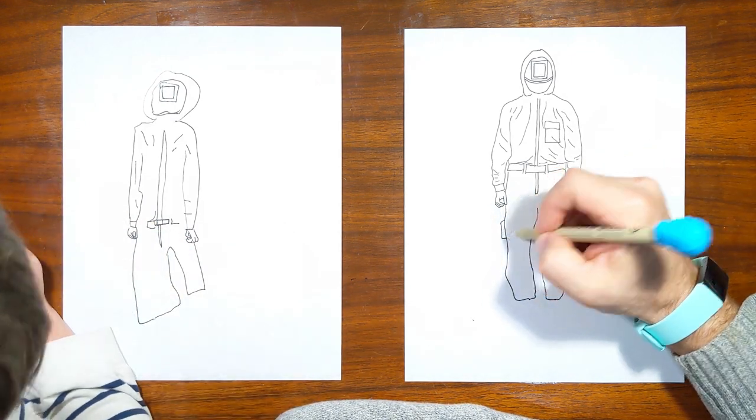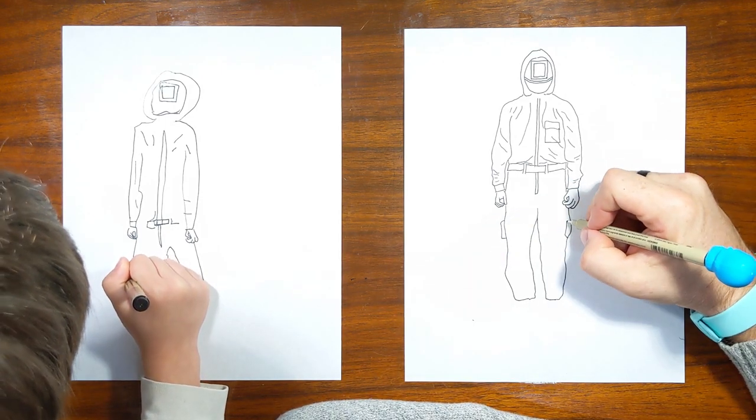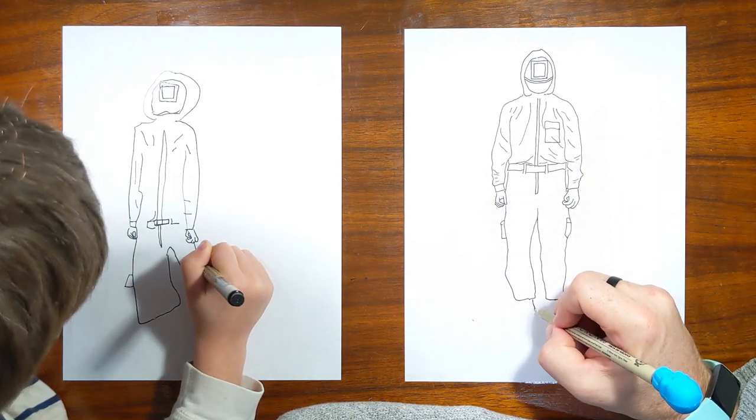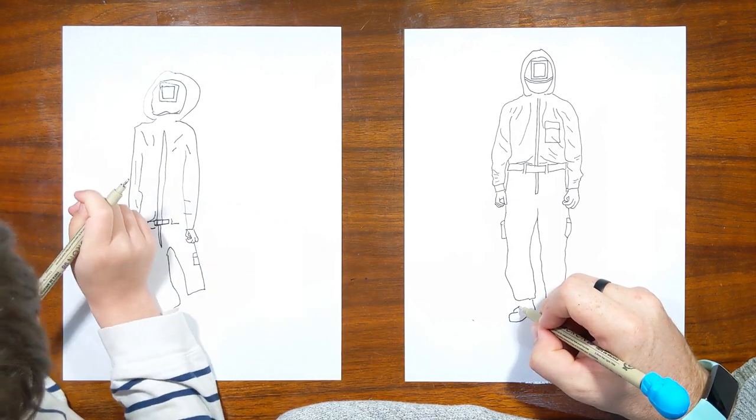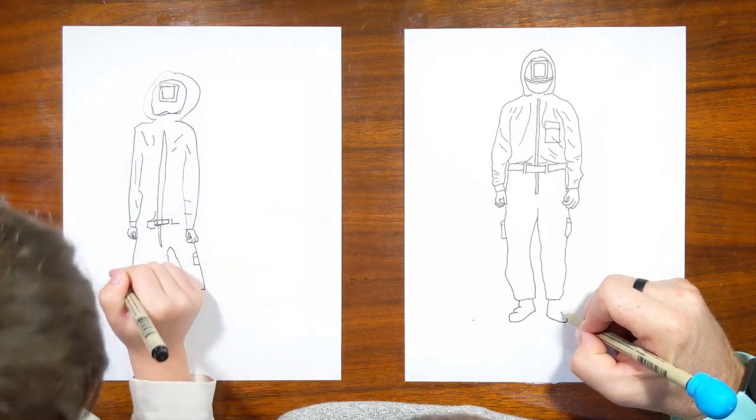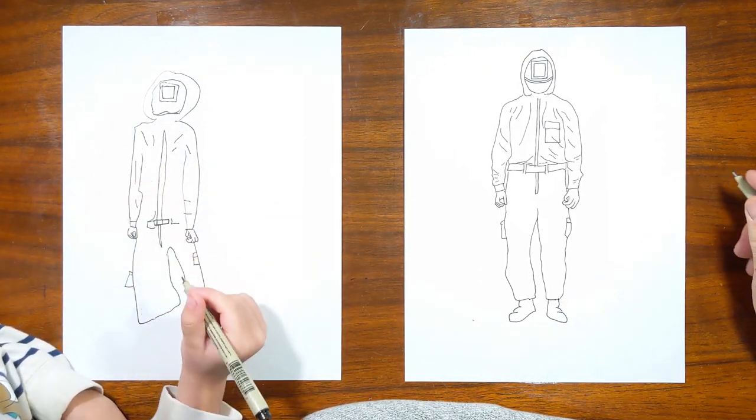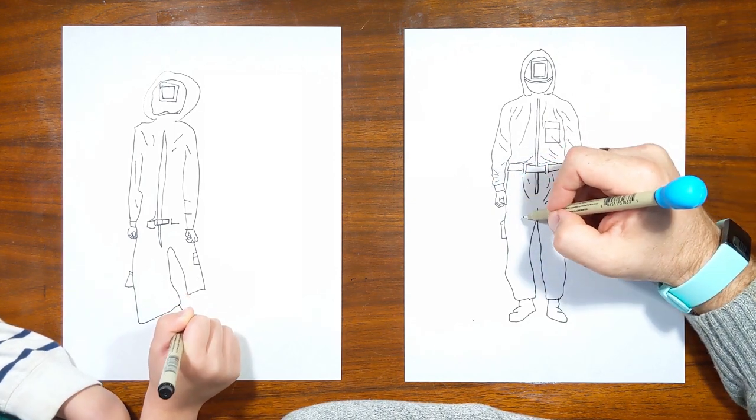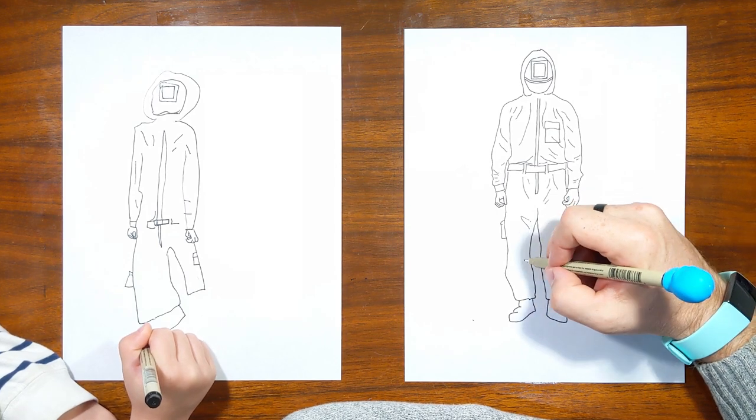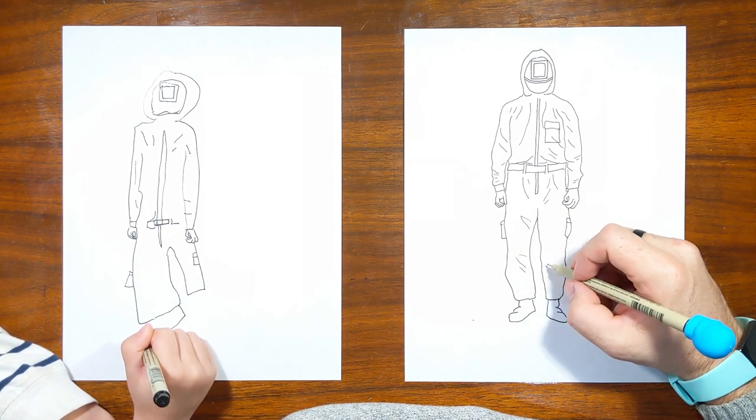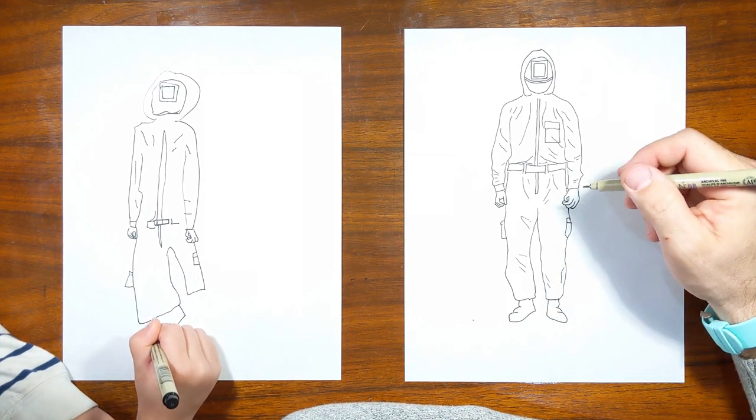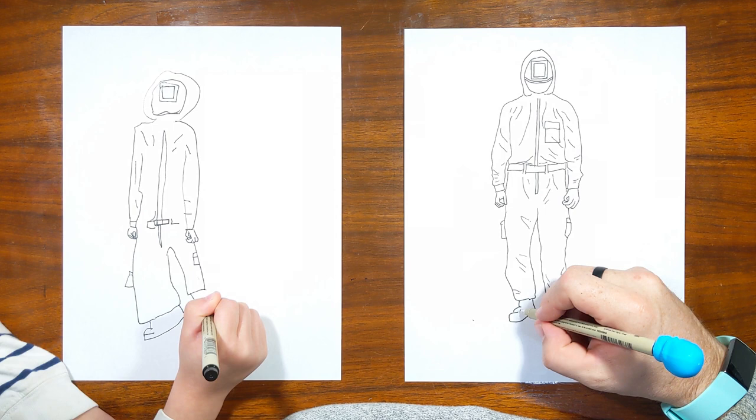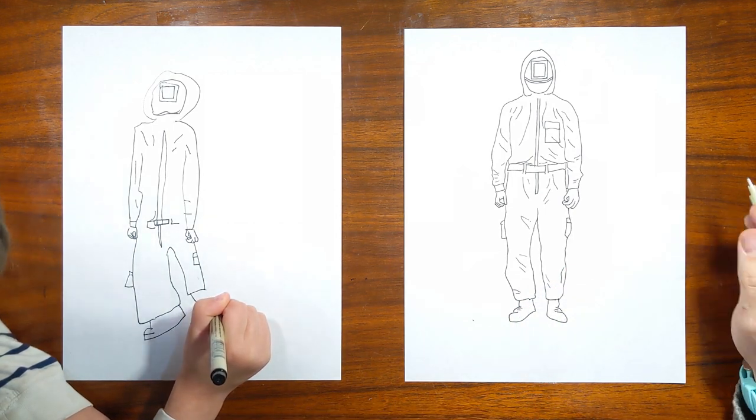Okay, we gotta make sure we give him some, they have like the cargo short, cargo pants pockets on these two as well. Okay. All right. And then just simple black boots. All right. And then don't forget, you gotta make some creases in here.